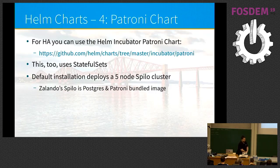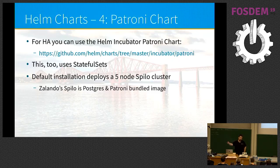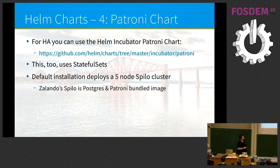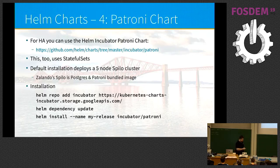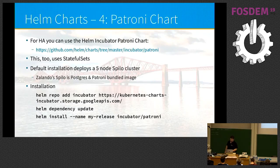Another interesting chart is the ready-made Patroni chart. You can use it directly from the Helm incubator — the staging area for Helm charts. It also creates StatefulSets of a master database with replicas. The default installation is five nodes, and it uses Spilo — the combination of Postgres and Patroni — put together in the same image by Zalando. You add the repository to Helm, update the dependencies, and then 'helm install incubator/patroni'. Similarly, it creates the same type of cluster.